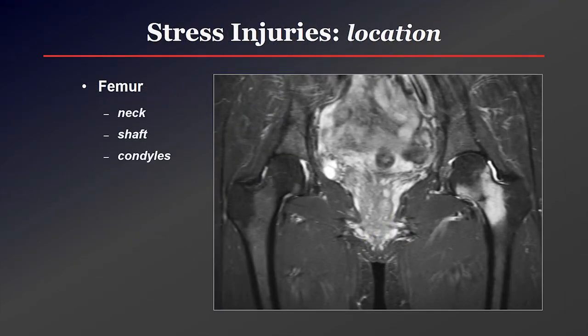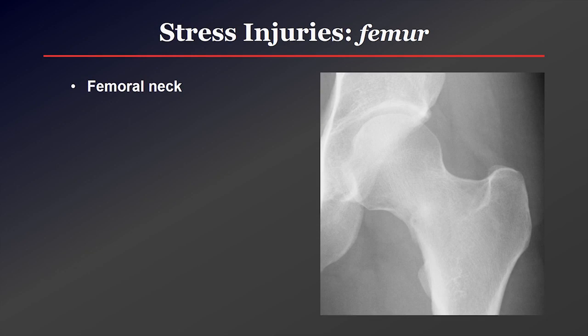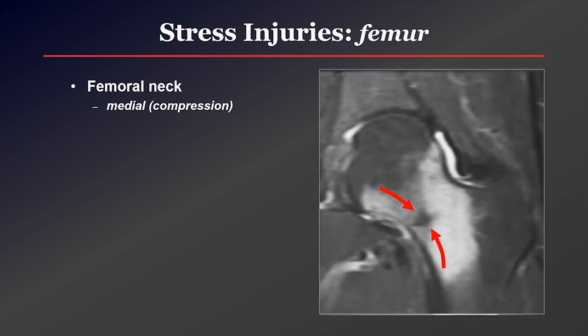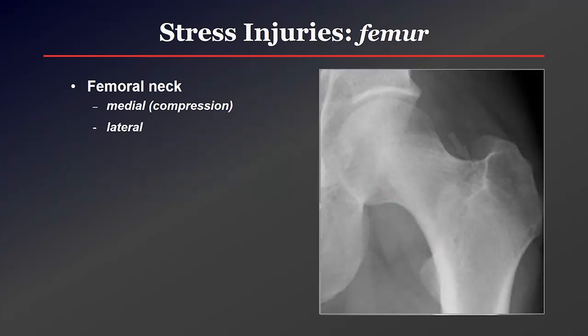Moving to the femur, stress injuries can occur in the neck, shaft, or distal condyles. At the femoral neck it's important to separate medial and lateral. Medial femoral neck stress fractures tend to do well because that's the compressive side of the bone — with its concave architecture, the bone on that side undergoes compression with weight bearing, so these fractures tend to be compressed and heal fairly well, certainly much better than a lateral femoral neck fracture.